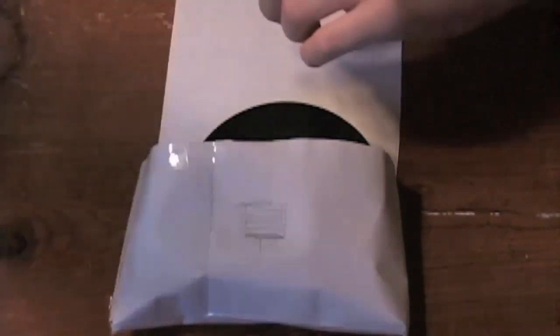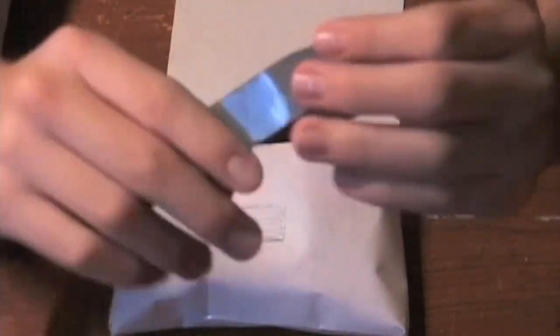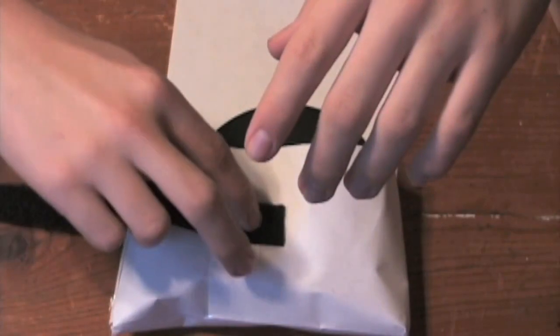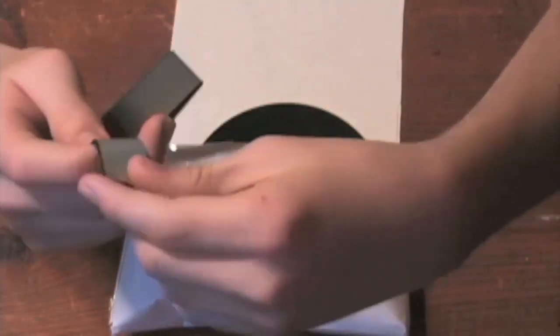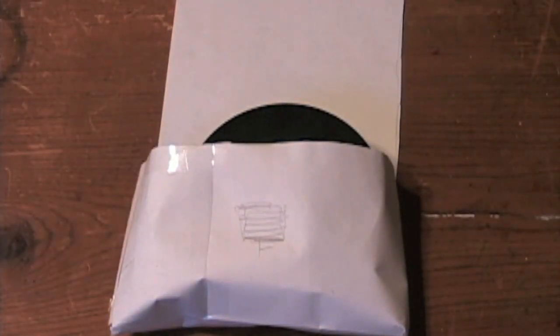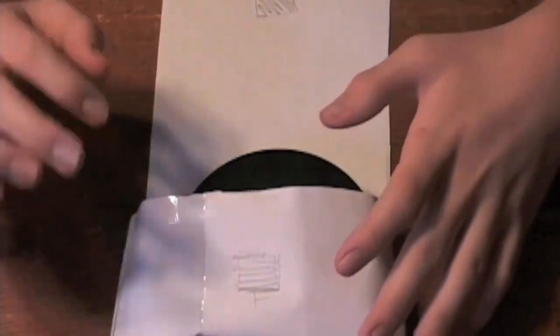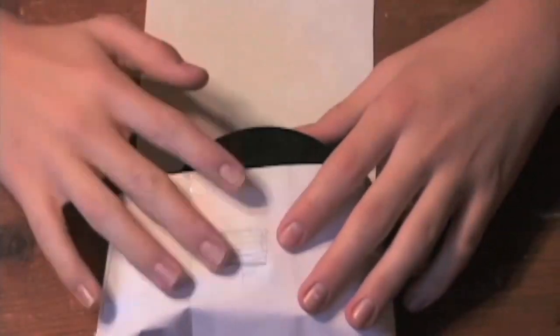Sew it in. Actually, the Velcro I used had a sticky side on the back, so I recommend that too. But also you should probably sew through it just to make sure. And if you do use the sticky Velcro, make sure you let it sit for at least 24 hours before you latch it and then unlatch it, because it might rip it off and the adhesive hasn't fully set in.